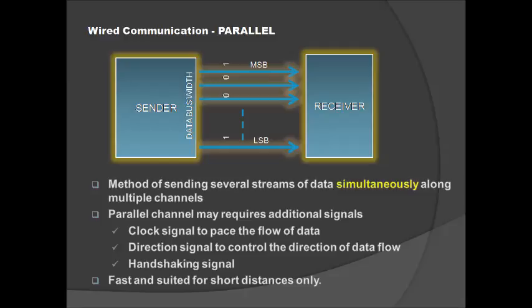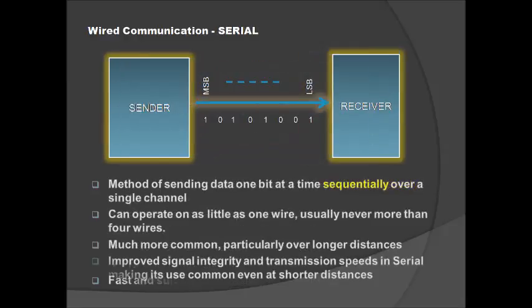Parallel communication is very fast and suited for shorter distances only, because for longer distances it is not suitable. The reasons are the complexity of hardware and difficulties in synchronization. The width of the data bus also matters — besides the number of channels required for communication, if a microcontroller has an 8-bit data bus, then the parallel bus will also be 8-bit. So it depends on the data bus of the microprocessor unit or the device used in parallel communication.